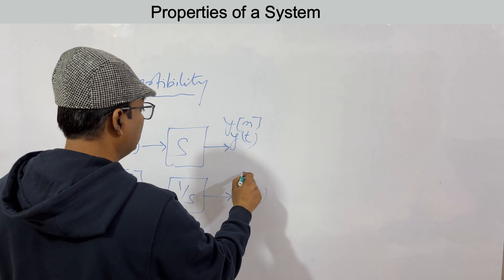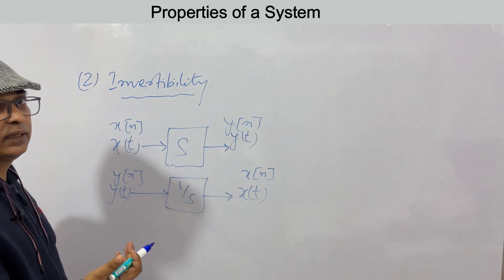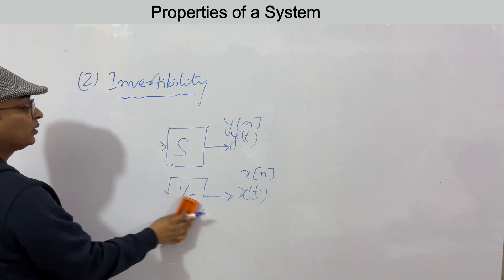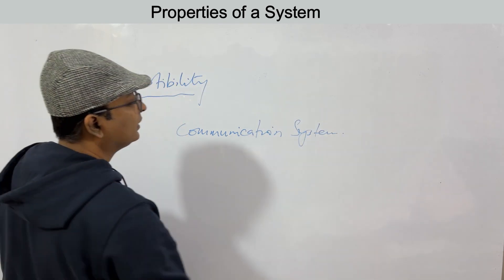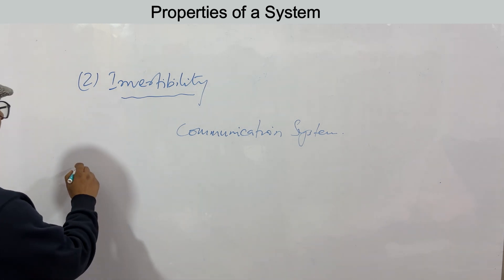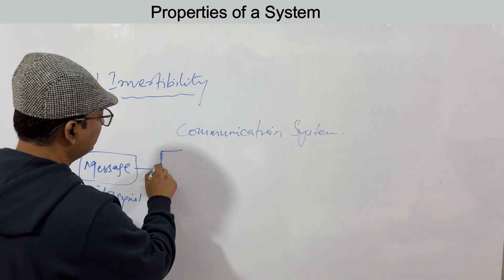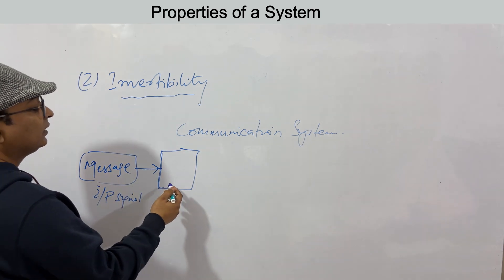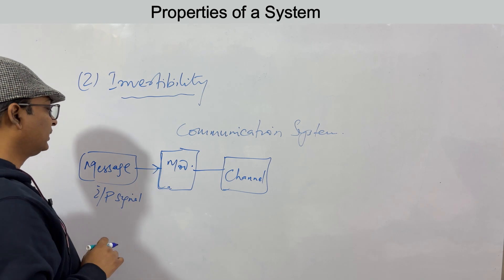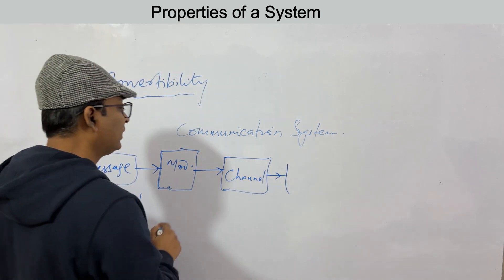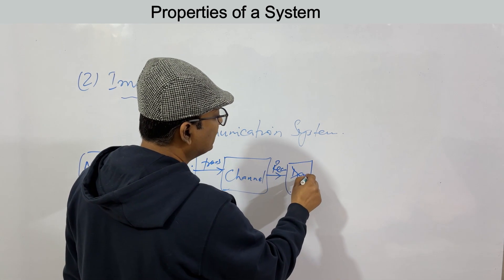You might ask why we need to retrieve the original signal. A clear example is a communication system: the message is the input signal. First, it is modulated, then transmitted through a channel. At the receiver, you demodulate it — applying the inverse system — to retrieve the original message signal.